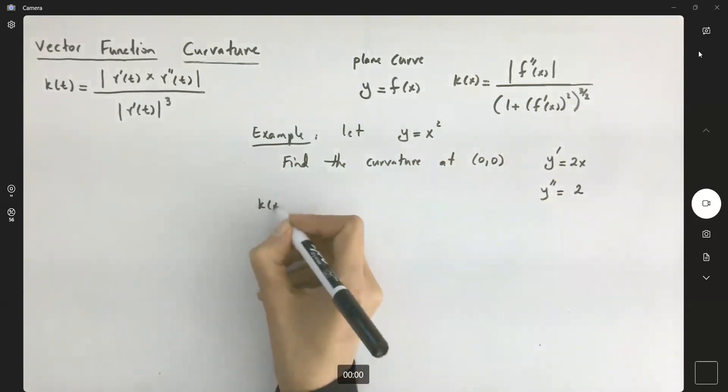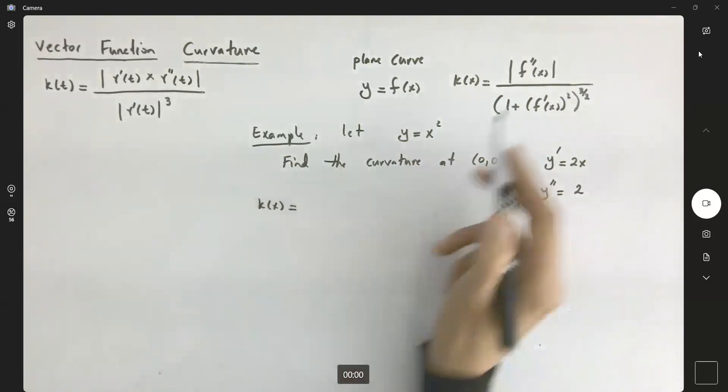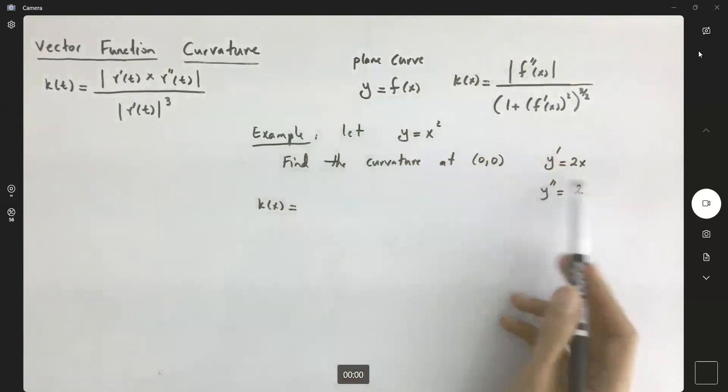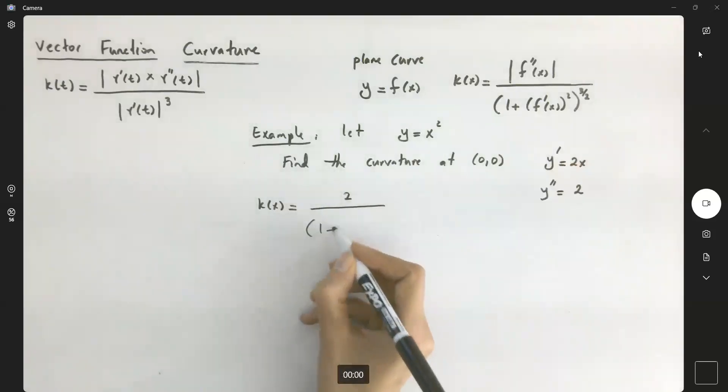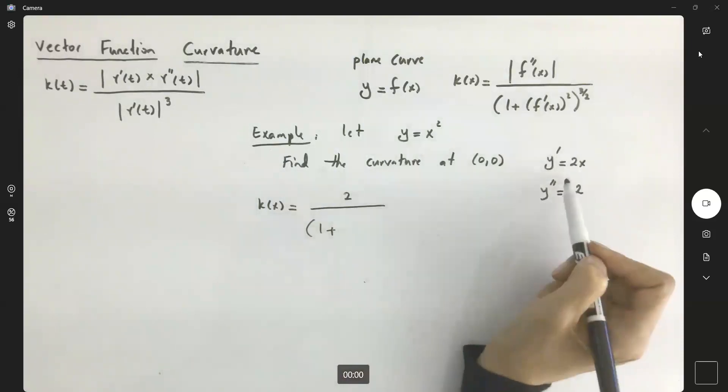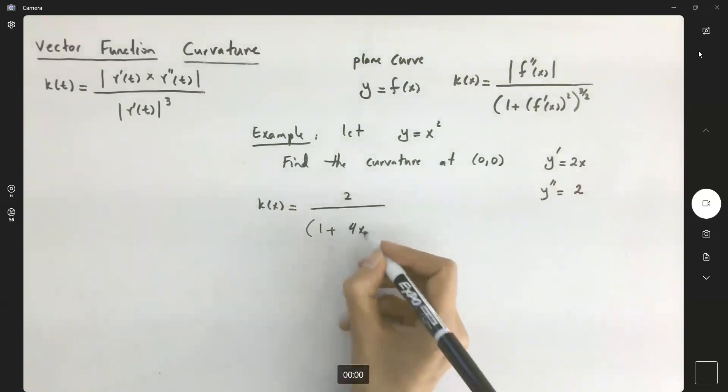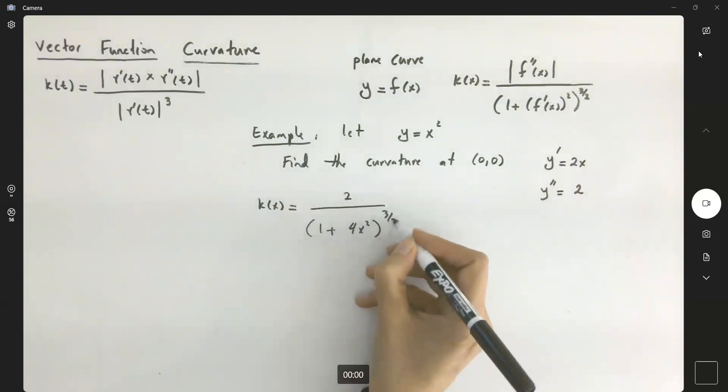k of x becomes, well here we have the absolute value of the second derivative which is just 2. This is a positive number. On the denominator you have 1 plus 2x to the second power, for x squared, raised to 3 halves.